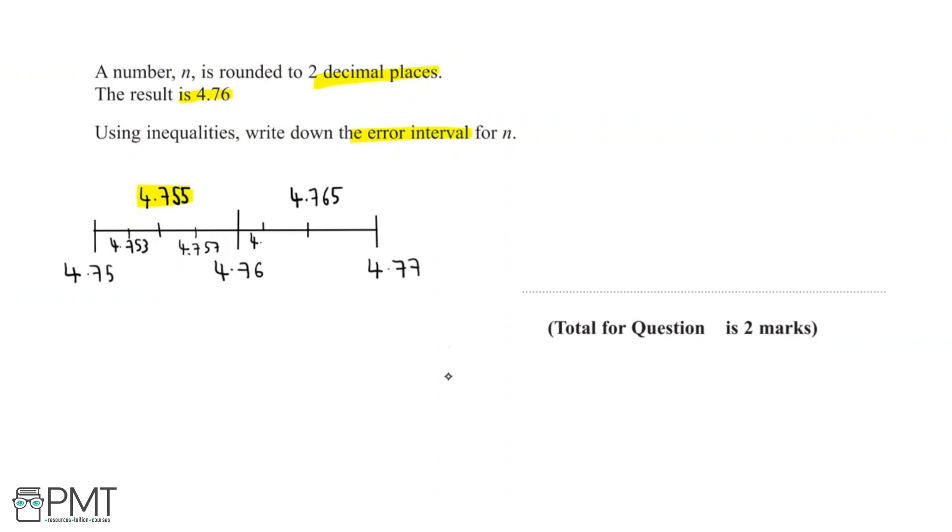If we have 4.762, that will round down to 4.76. And what about the really small numbers below 4.765? If we have 4.7649, that will still round to two decimal places to 4.76. And so we can see that the numbers below 4.765, but not including, will round to two decimal places to 4.76.